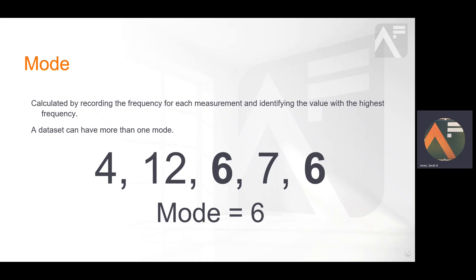Finally, the last measure of central tendency is the mode. This is the most frequently occurring value in the data set. It is possible to have more than one mode. 6 is the only number that appears more than once in our data set, so our mode is 6.